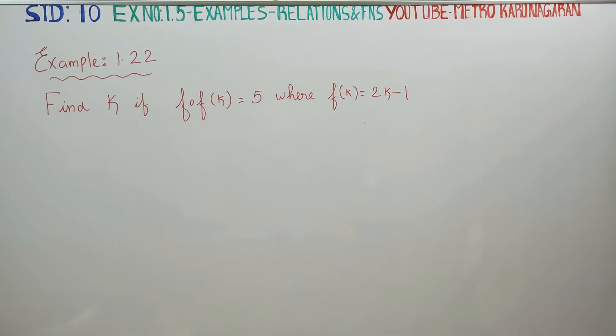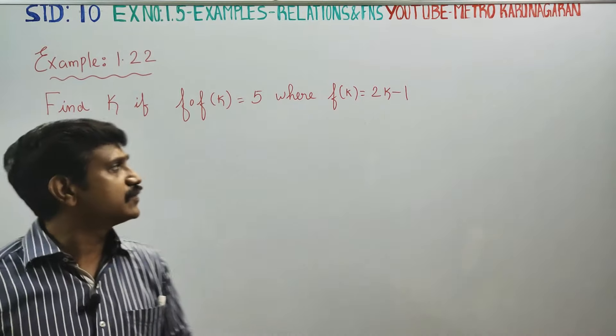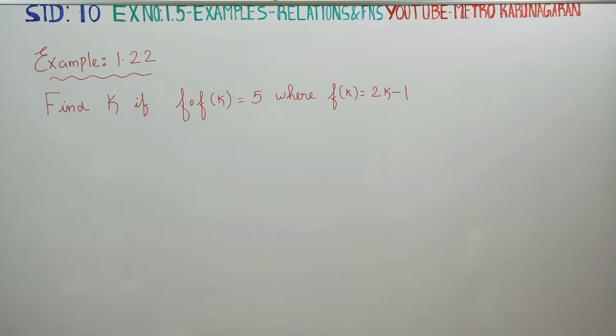Dear 10 standard students, in exercise number 1.5, example 1.22, find the value of k if f of f of k is equal to 5 where f of k is equal to 2k minus 1.